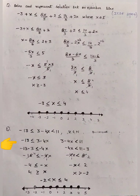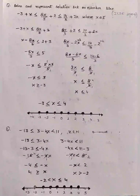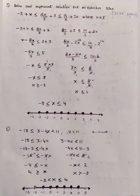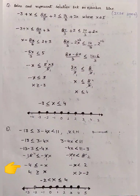Let us solve the first inequation: −13 ≤ 3 − 4x. We transfer +3 to the other side, which becomes −3, giving us −16 ≤ −4x. Then 4 cancels 16 four times, giving −4 ≤ −x. Both minus signs cancel and the symbol changes, so the solution is x ≤ 4.